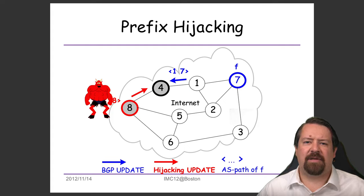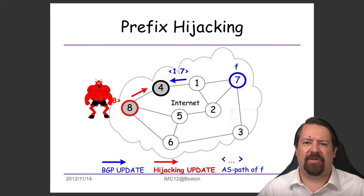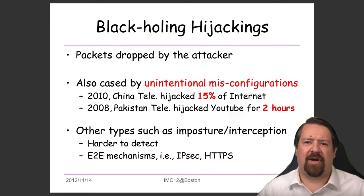This attack is incomplete because ASs further away from AS8 will still use the correct path via AS7 to reach prefix F. The most common type of hijacking is black holing, where packets are dropped by the attacker. In some cases, these are not malicious but simply a misconfiguration.